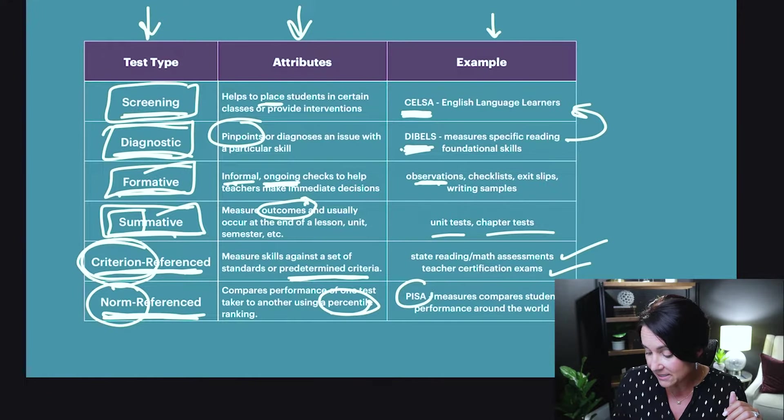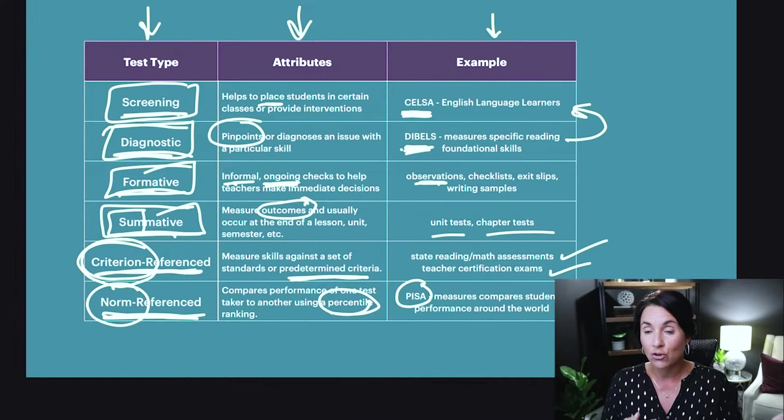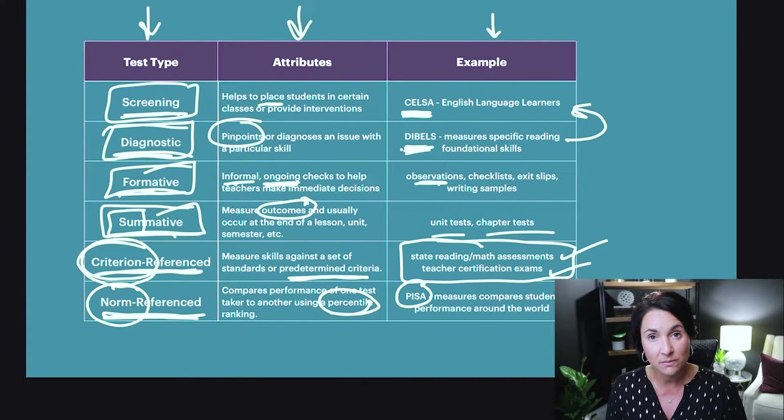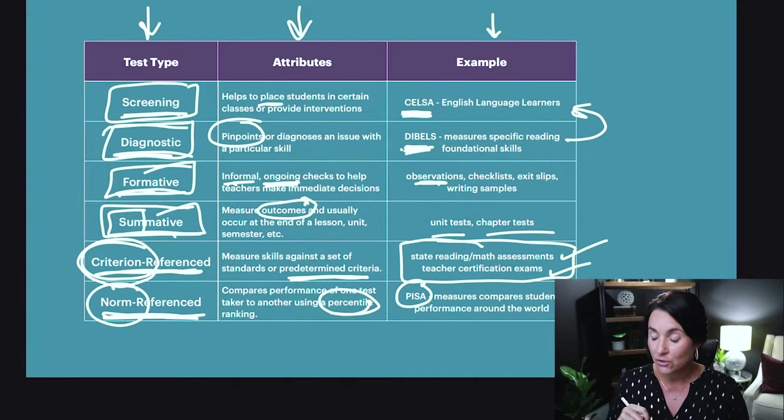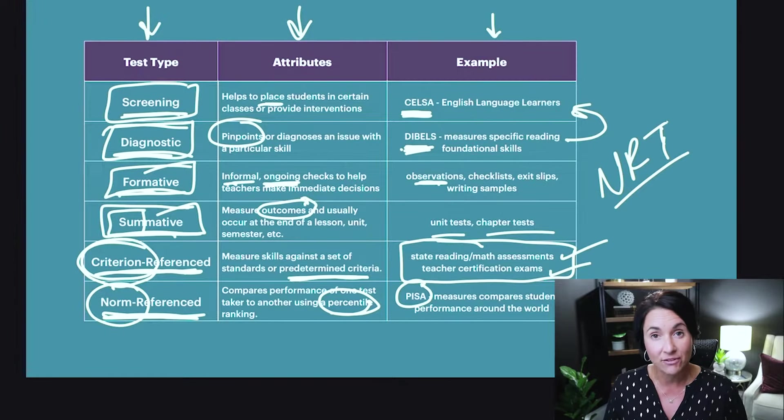A quick example is the PISA exams, which are administered in every country all over the world and each country is given a percentile ranking. You'll see it come out every year — China and Japan are beating the United States, Finland is beating the United States based on PISA scores. In your state, you might do your state criterion-referenced test — the reading and math assessments — and then possibly the next day do something called the NRTs or norm-referenced tests, so the state can measure students against other students in different districts and schools.